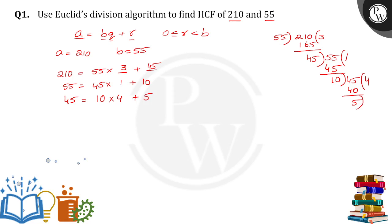So 5 will be the divisor and 10 will be the dividend. 5 times 2 is 10. 10 minus 10 is 0. So 5 will be the HCF here.